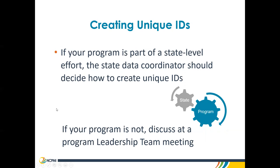The guidance for assigning identification codes should be made at the state level if data are being collected as part of a state level effort. The state data coordinator should decide how programs will create unique identification codes and train program data coordinators in how to assign identification codes to the staff and children at their program prior to data collection. If data are not being collected as part of a state level initiative, then programs should discuss this task at a program leadership team meeting and decide how unique identification codes will be developed and assigned.